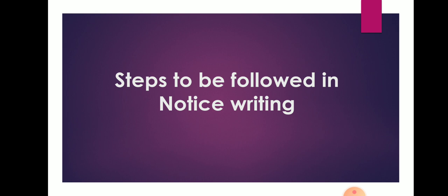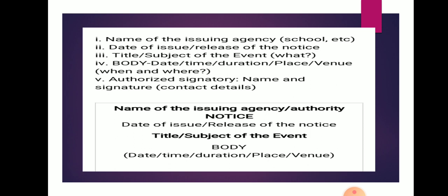Steps to be followed in notice writing: Number one, the name of the issuing agency — that is school, college, hospital, etc. Number two, the date of issue or release of the notice — you have to give the date on which the notice is being published. Number three, the title or subject of the event — for example, Sports Day, Annual Day celebration, or a cultural competition being held in your town. Number four, the body containing date, time, duration, place, and venue — when and where the activity is going to be held.